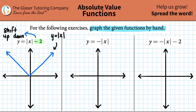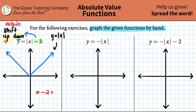Anytime something is outside of a function, it's a vertical shift — it will shift up and down. A plus value shifts the graph up, so if it were a plus two, you would be shifting the whole graph upward. However, since this is a minus, you're shifting it down. So the only shift we have is a negative two outside the function, which means shifting down two units.